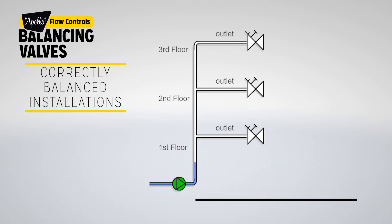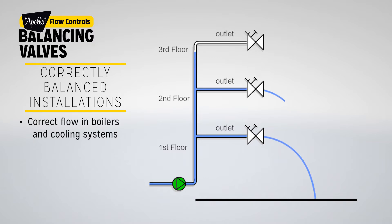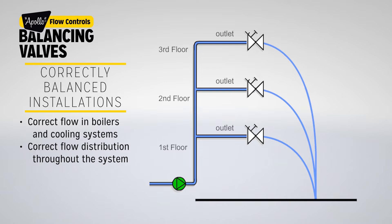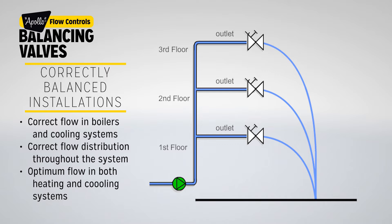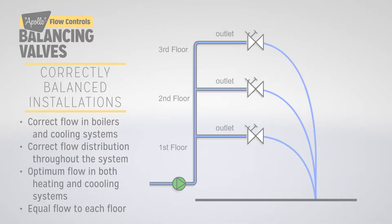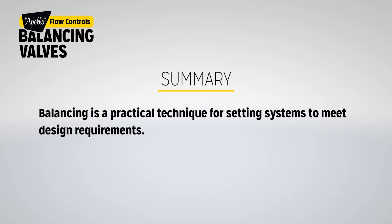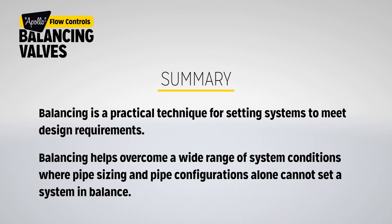Installations that have been balanced correctly will obtain the following results: correct flow in boilers and cooling systems, correct flow distribution throughout the system, optimum flow in both heating and cooling systems, and equal flow to each floor.